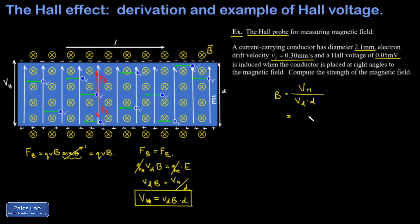I have a Hall voltage of 0.05 millivolts, so I'll throw in three extra zeros to convert to volts. Our drift velocity is given in millimeters per second, so 0.0003 meters per second. The width of our conductor was given as 2.1 millimeters, so 0.0021 meters.